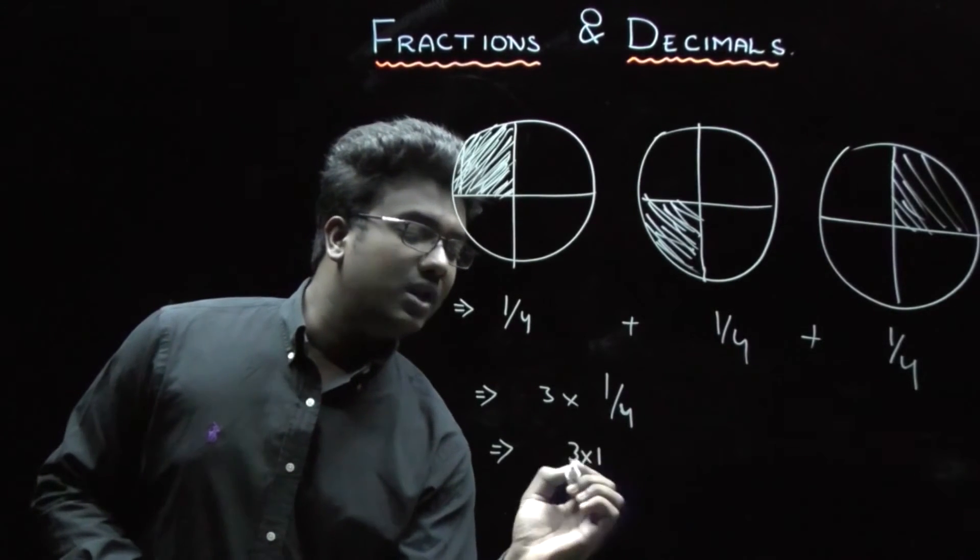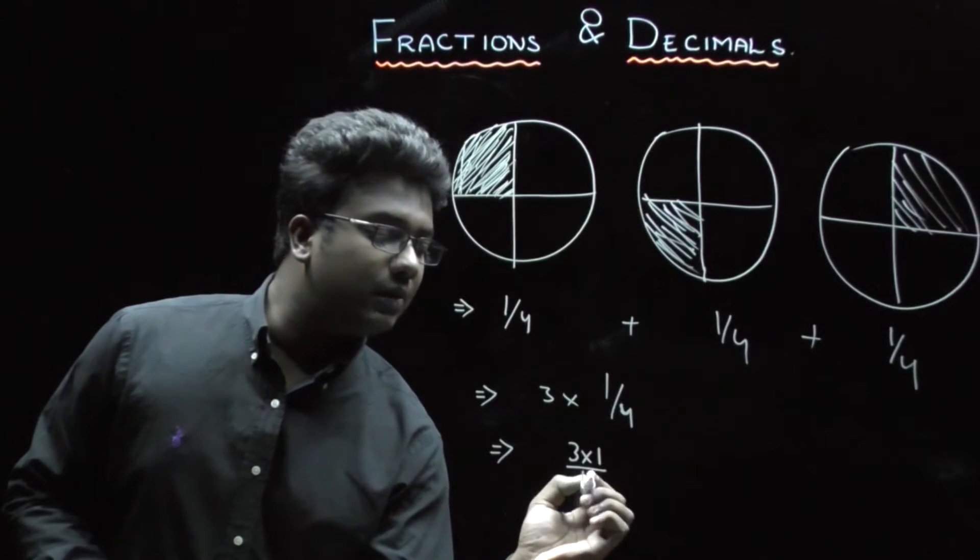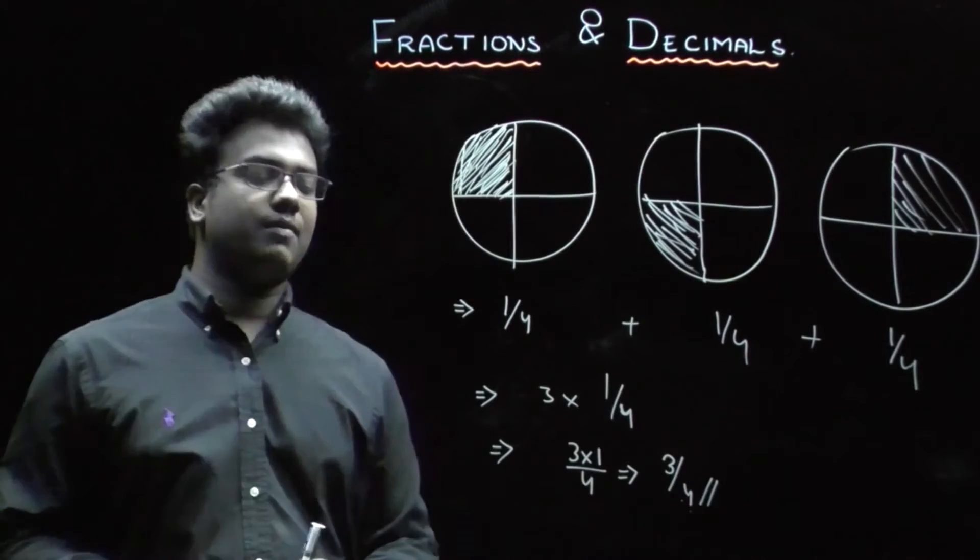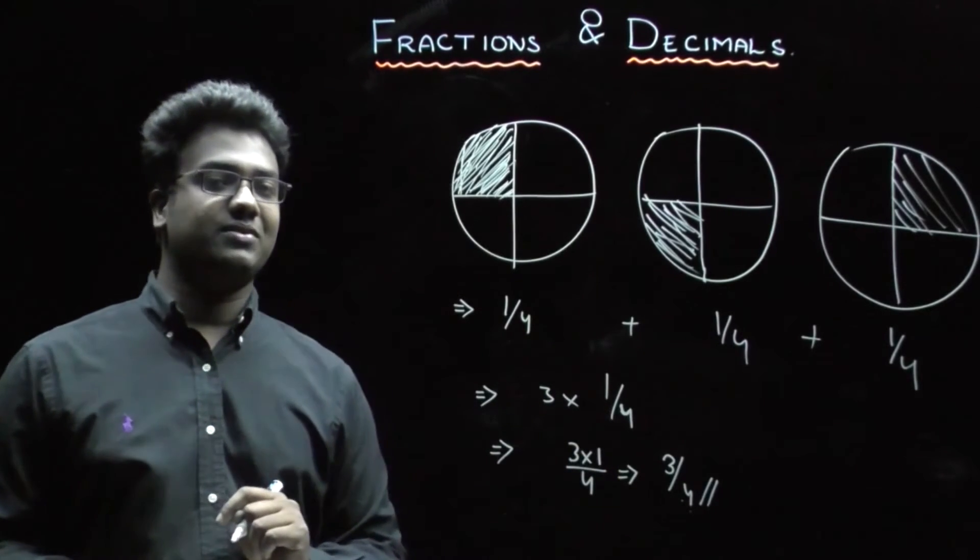Now, the numerator of the fraction is 1. Hence, 3 multiplied with 1 divided by 4 is your result of value. So, 3 by 4 is the value of 3 multiplied with 1 by 4.